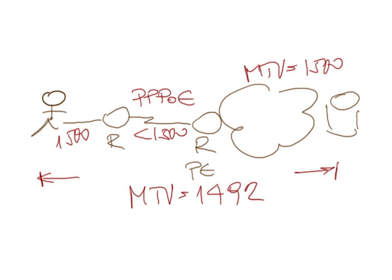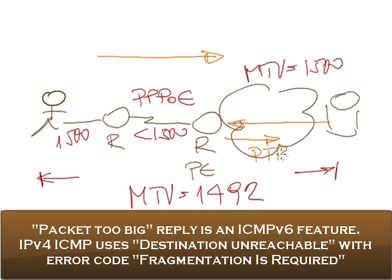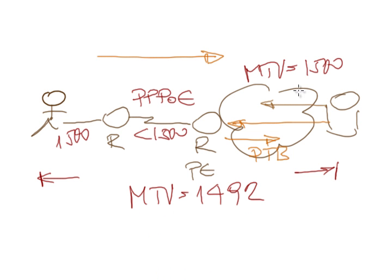The first problem is that path MTU discovery relies on ICMP packets. The end user would send, for example, a GET request to the web server and the web server would reply with an oversized response and this response would get to the first router where the link is below 1500 MTU and so this first router, the PE router in our case, would send back an ICMP packet too big reply. In best case, this reply would get to the web server and the web server would say, oops, okay, I need to reduce the packet size and would send the packet that is at most 1492 bytes long.